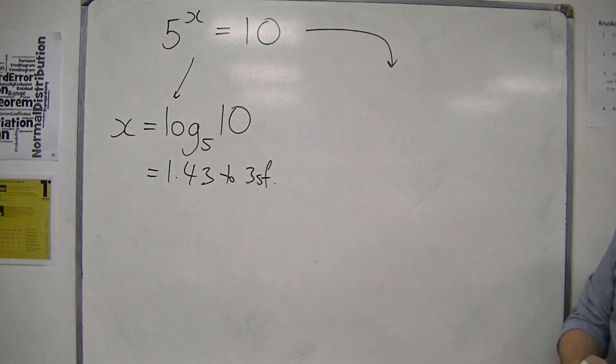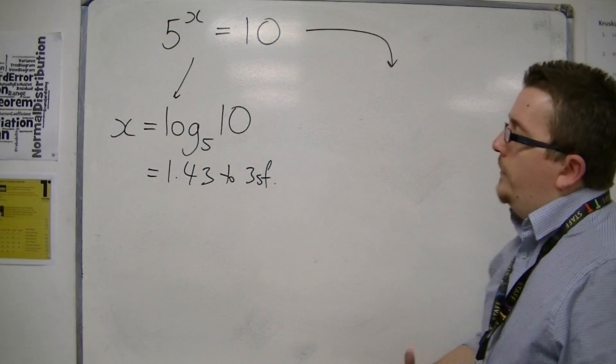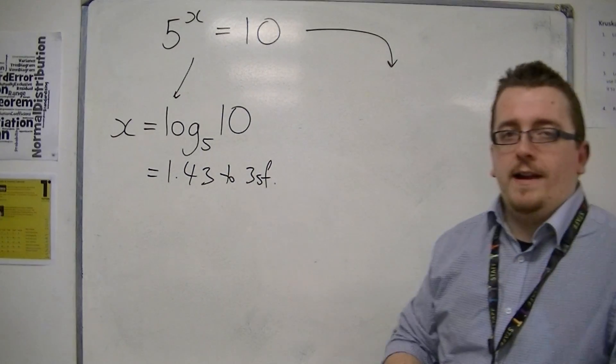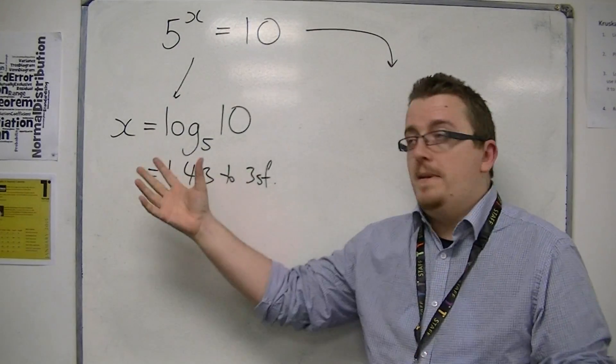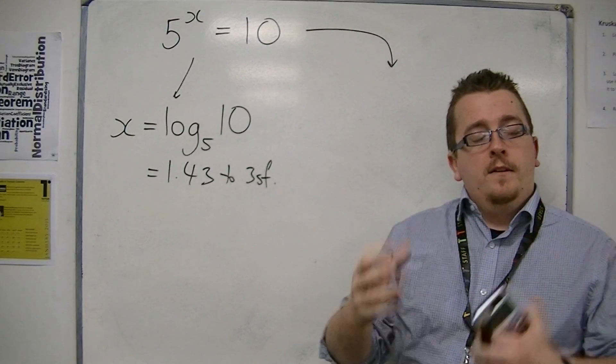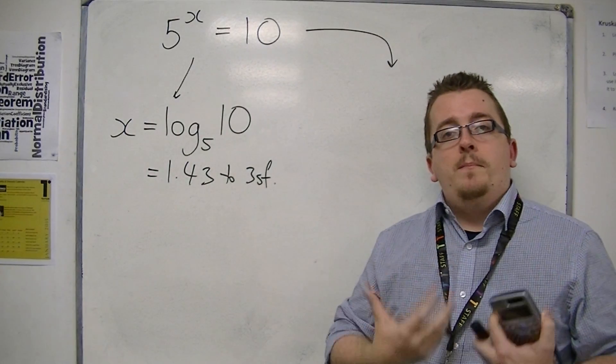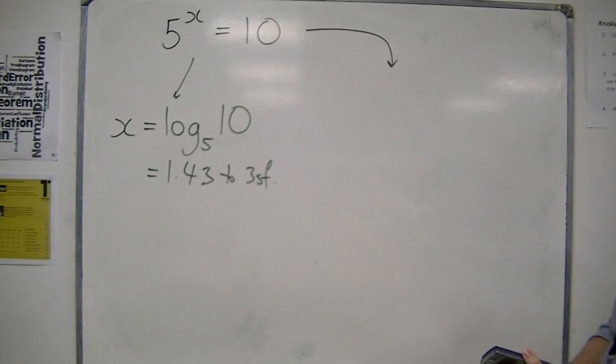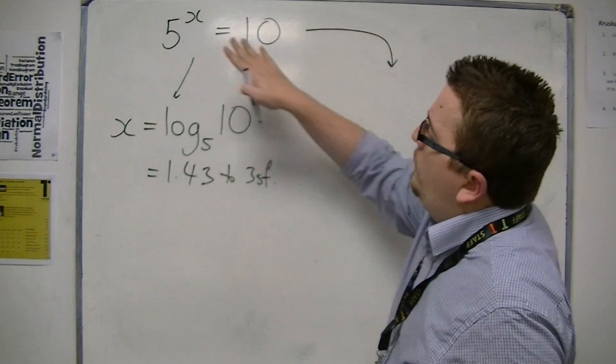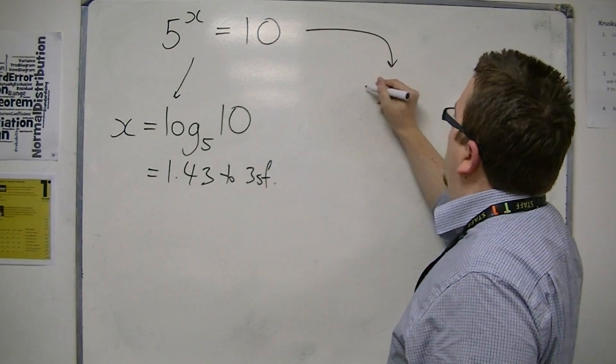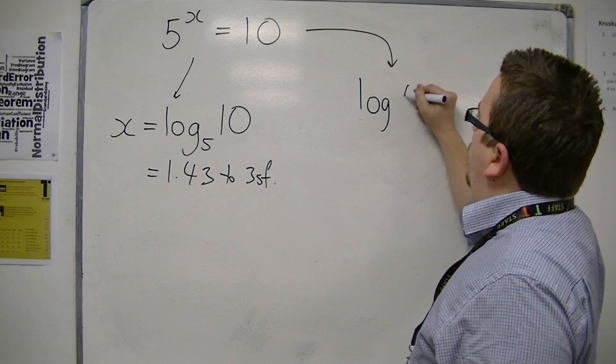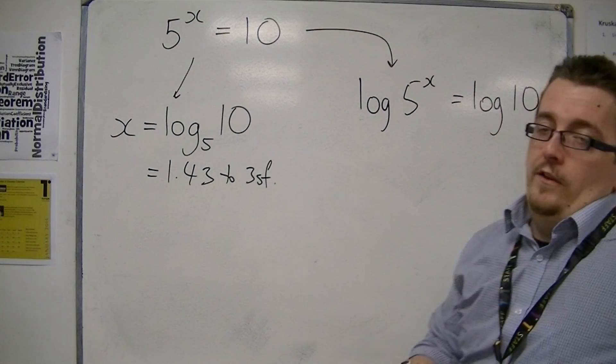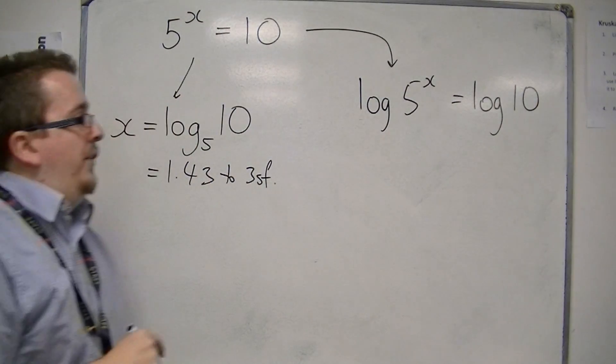The second method is one that I was primarily taught, because at the time I didn't have a button on my calculator that allowed me to immediately type that straight in. So I was taught a method of logging both sides. Which means that if we have 5 to the x is equal to 10, then log of 5 to the x must be equal to log of 10. That's what we deemed as logging both sides.